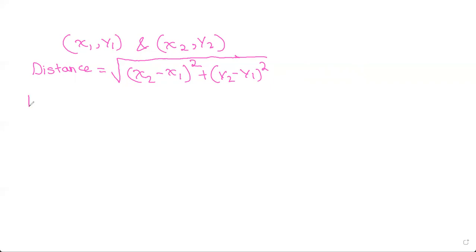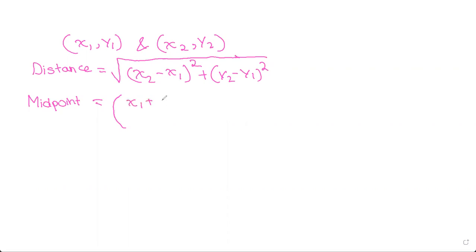Now let's look at midpoint. What are the coordinates of the midpoint between these two points? It will be ((x1 + x2) / 2, (y1 + y2) / 2). This is the formula for the coordinates of the midpoint.